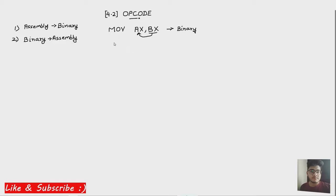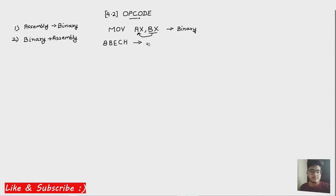Similarly, if we are given some binary form, let's take an example which we have also taken in the previous tutorial, which is 8BECh. So you are given this hexadecimal format and you can simply convert it into the binary form. Let's convert this to binary. In order to convert it to binary form, you can see 8, B, E, and C — these are the four parts. If you want to represent 8 in binary, remember that H means it is a hexadecimal number.